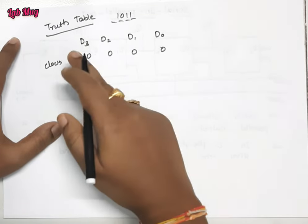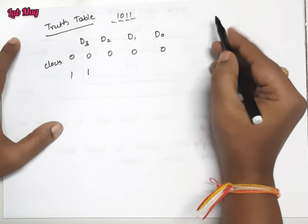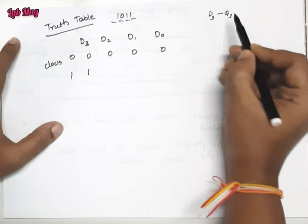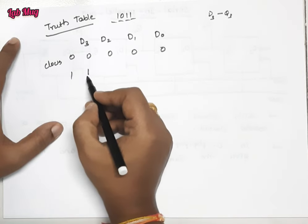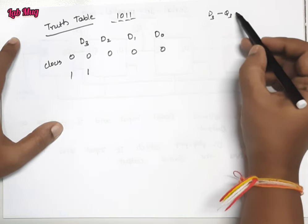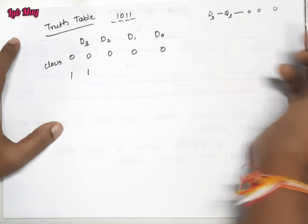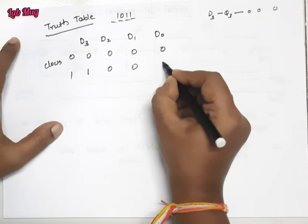So when we pass 1, the flip-flop D3 output Q3 gets 1. So then the D3 output is 1. The remaining values for Q2, Q1, Q0 are 0 0 0.